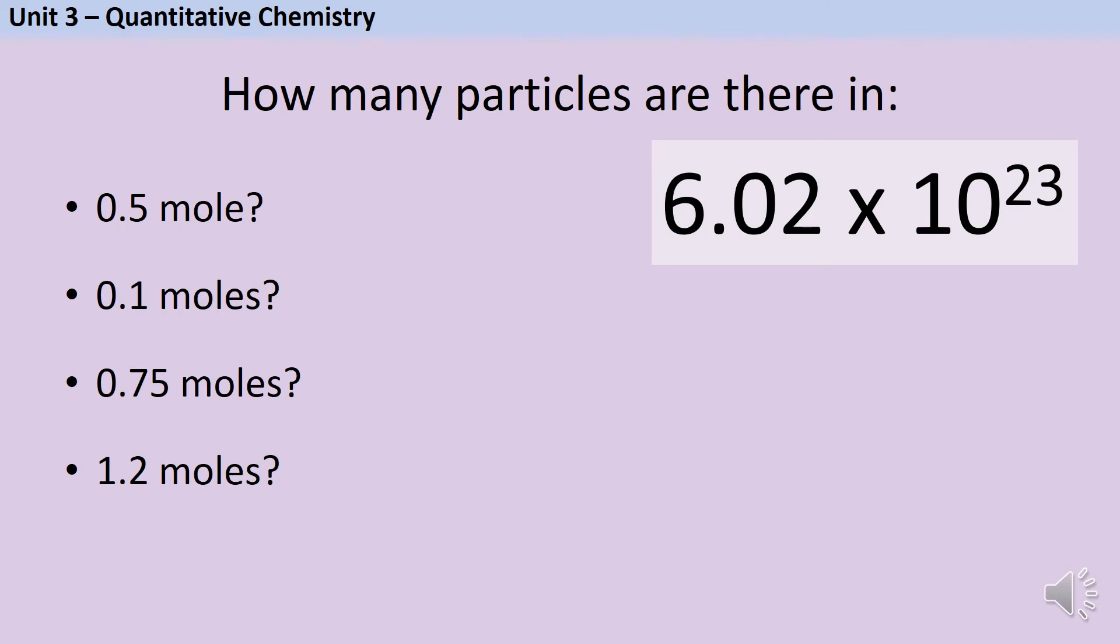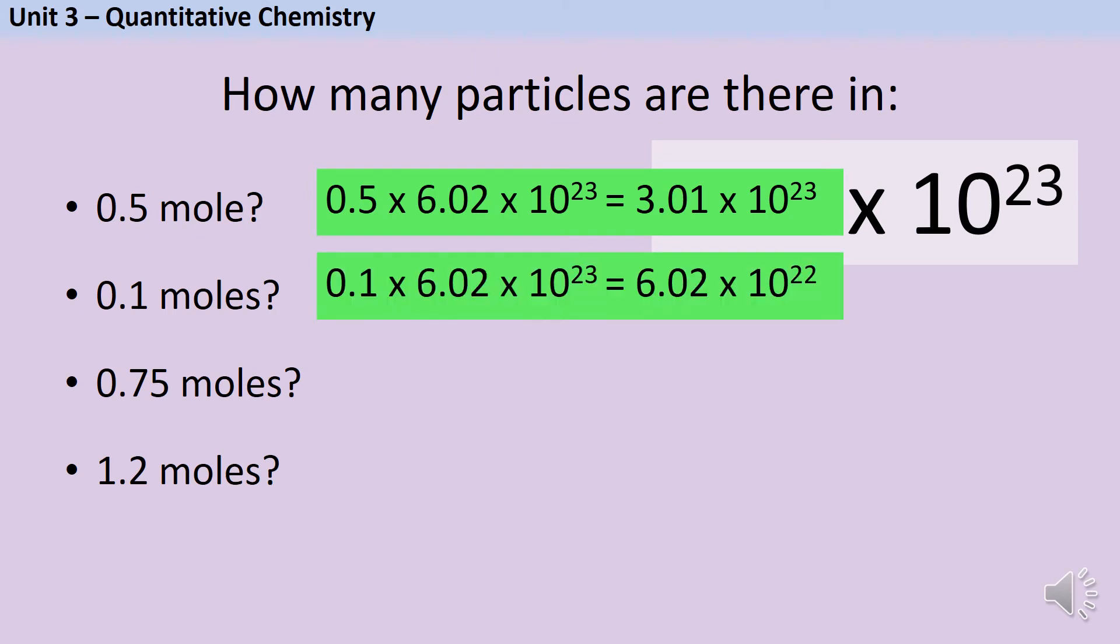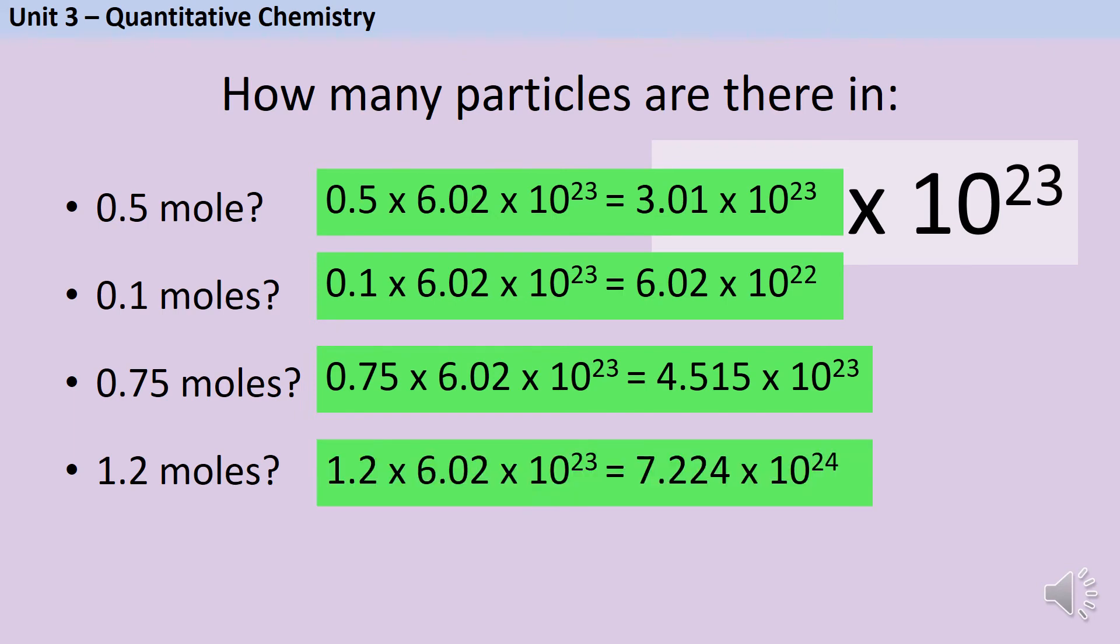So in a sample that contains half a mole of particles, there are 3.01 times 10 to the 23 particles. In a sample that contains 0.1 moles of particles, there are 6.02 times 10 to the 22, and in a sample that contains three quarters of a mole of particles, there are 4.515 times 10 to the 23. And in a sample that contains 1.2 moles of particles, there are 7.224 times 10 to the 24.